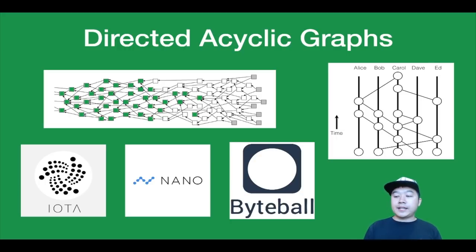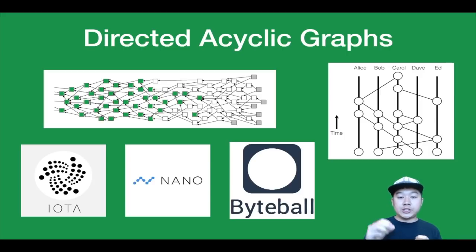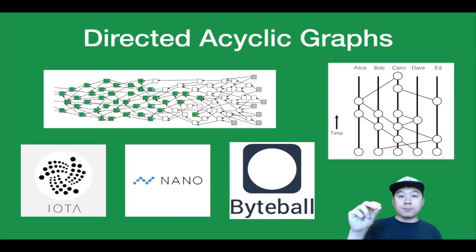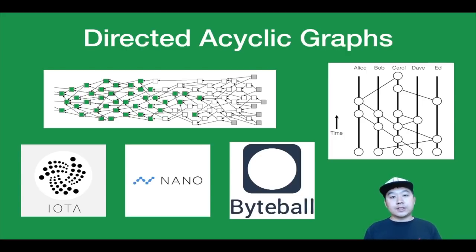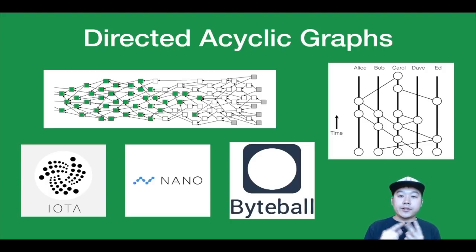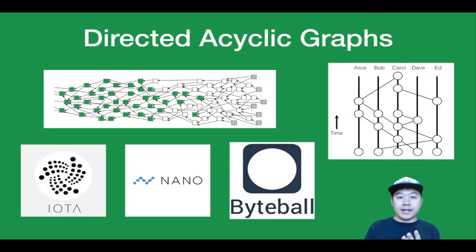These implementations vary in terms of tip selection — which older transactions your new block will confirm — the ordering of transactions, and how finality is determined. Some very famous projects that implement this approach are IOTA with its Tangle, Nano, Byteball, and Hashgraph.